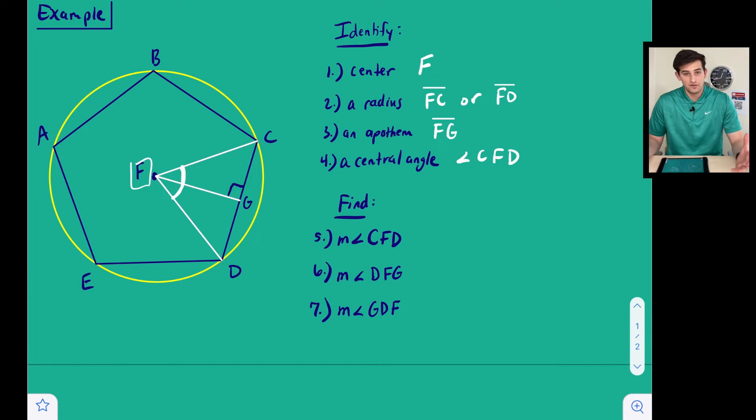Now we want to find three measures, the first of which being our central angle CFD. Remember, we are going to take 360 degrees and divide it by the number of sides we have. If this is a pentagon, we have five sides, so we can do 360 divided by 5, and that's going to give us 72 degrees.